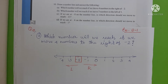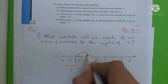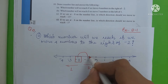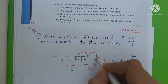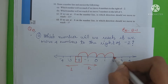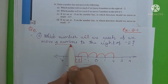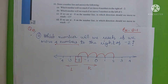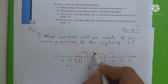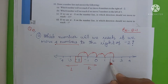We move 4 numbers to the right of minus 2. Starting from minus 2, we count: 1st number, 2nd number, 3rd number, and 4th number. We reach positive 2.